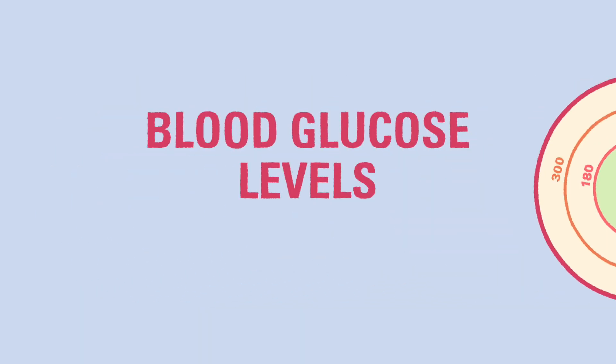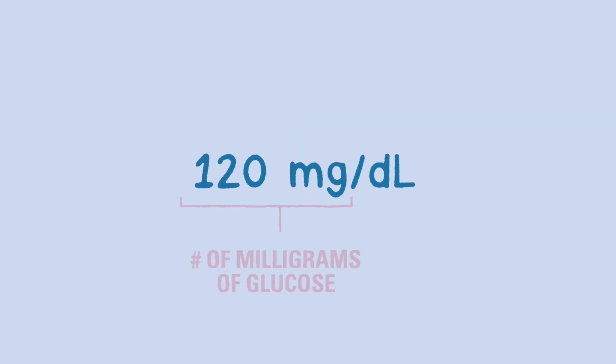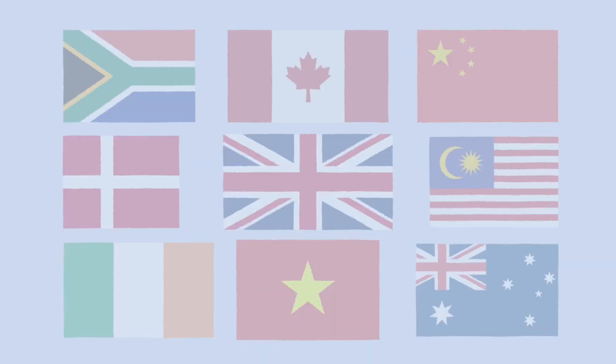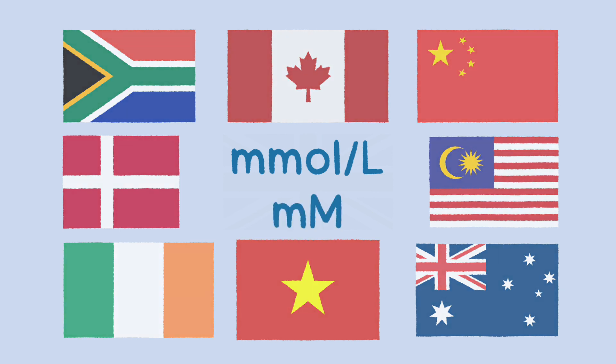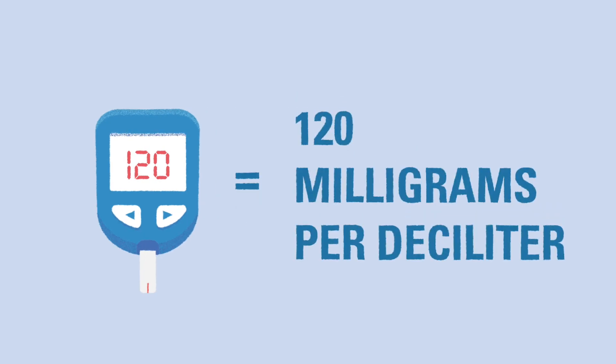In general, when we refer to blood glucose levels, we use a number and a label of milligrams per deciliter, which is the standard unit of measure in the United States. This measures the number of milligrams of glucose in a deciliter of blood. Other countries may use different measures like millimole per liter or millimolar. In this video series, whenever we mention a blood glucose level, we're using the milligrams per deciliter measurement.